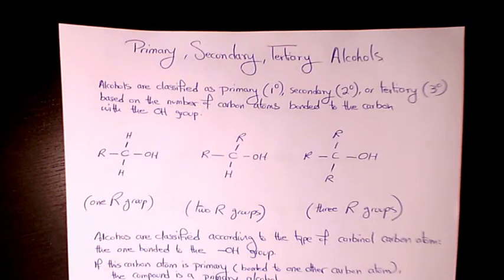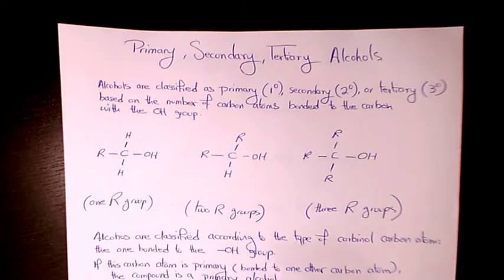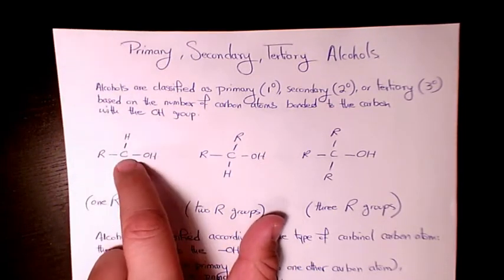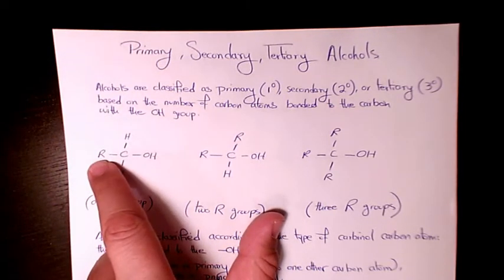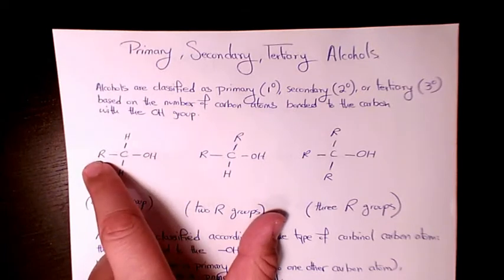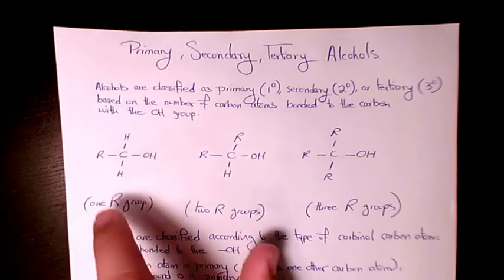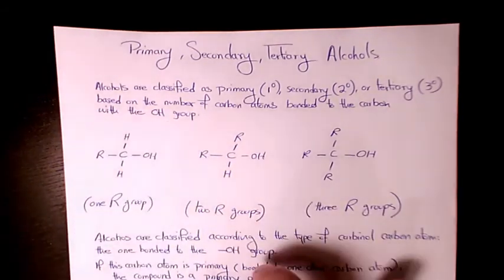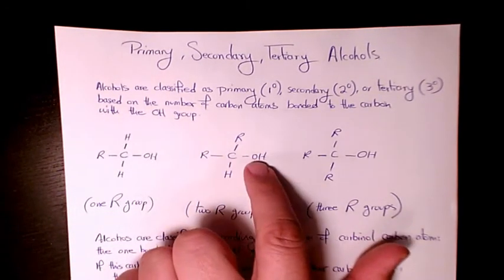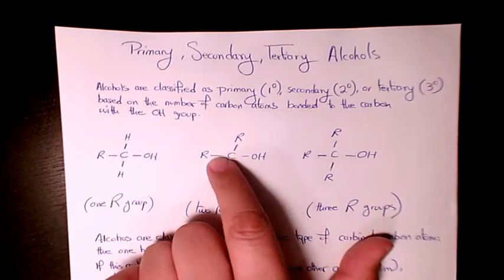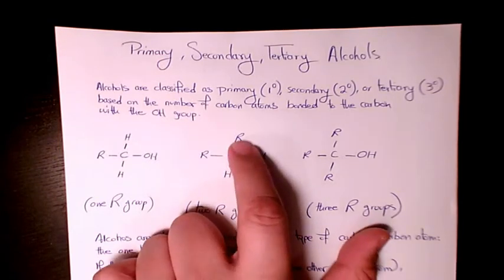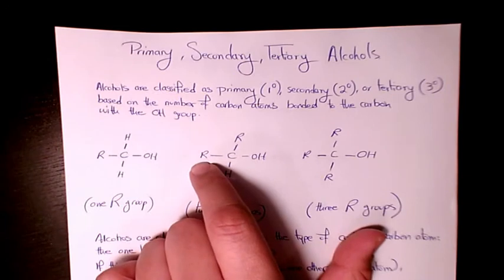As you see here, this hydroxyl is connected to the carbon, and this carbon connects to only one other organic compound — only one carbon. That's why it's called a primary alcohol, with one R group. Here, the hydroxyl group connects to the carbon, and this carbon connects to two other organic compounds.